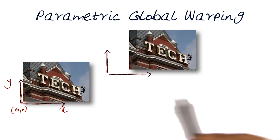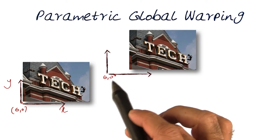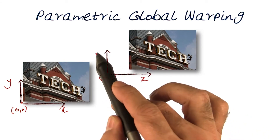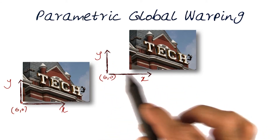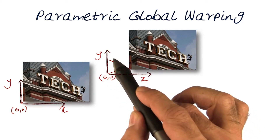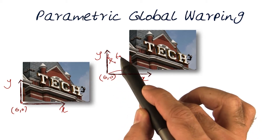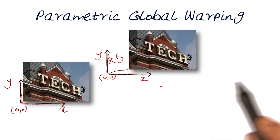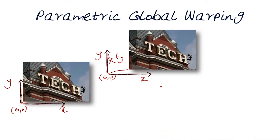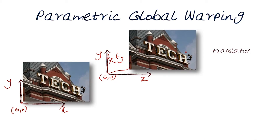Let's find another coordinate frame. Assuming this is again the origin with x and y, you notice this image has been moved a little bit. We claim that this has been translated by tx and ty — the translations in x and y. In essence, this says that we've translated the image, so this is a warping or transformation of translation.